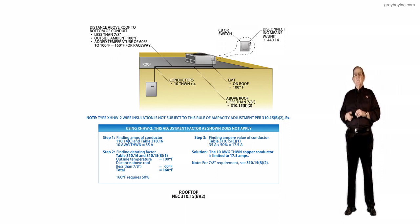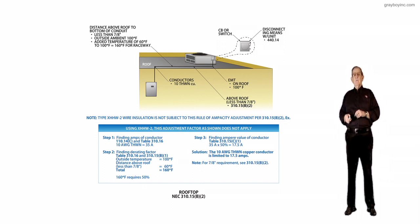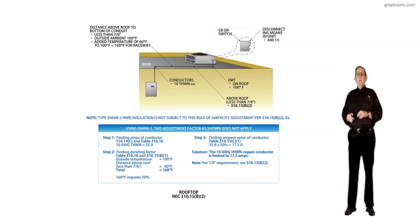Finding the derating factor from table 310.16 and 310.15B1, the outside temperature on the roof is 100 degrees Fahrenheit from the ASHRAE book. The distance above the roof is less than 7 eighths of an inch, so 60 is tacked on, and the total would be 160 degrees Fahrenheit. That 160 degrees Fahrenheit from your table 310.15B1 is 50%. So your conductor just dropped 50% in ampacity.